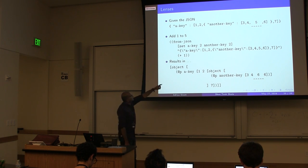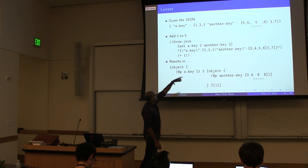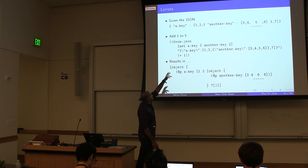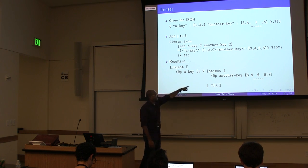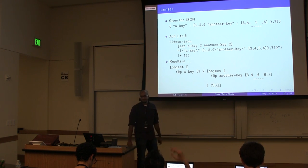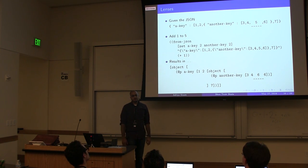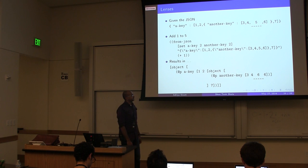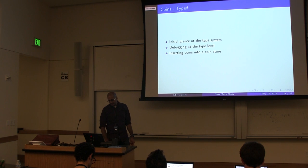So if I want to change a 5 to a 6, I just call funJSON with the action — set a key, another key — and the JSON string, plus whatever transformation function I want. I get back the final result with the 5 bumped to a 6. And these are pure — the original structure isn't changed. This is a functional update.